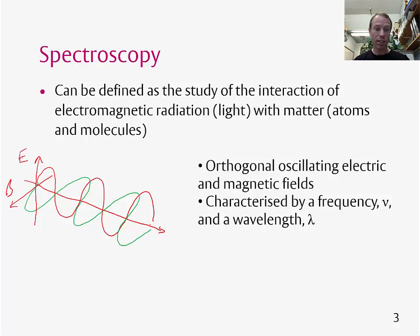These waves are characterised by a wavelength, so that's the distance between two peaks, and this is lambda, the wavelength. They also have a certain frequency, nu. The frequency is the number of oscillations that this wave exhibits in one second.